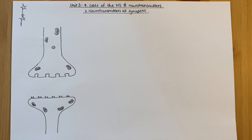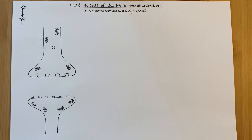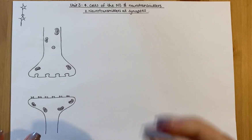This will be the second video of three, covering the neurotransmitters and cells in the nervous system within the fourth part of unit three of Higher Human Biology. For this, you initially need to know the structures of neurons and how those interconnect within the nervous system. If you understand that, I'll just crack on.